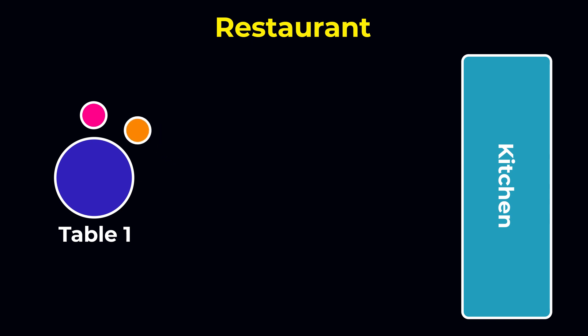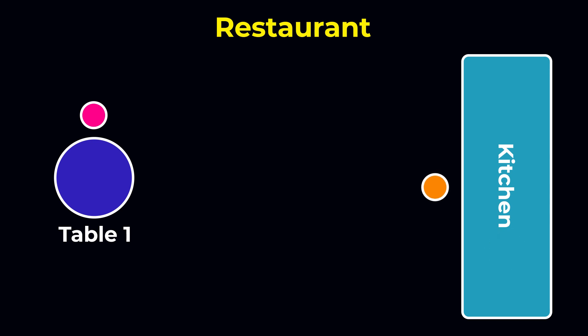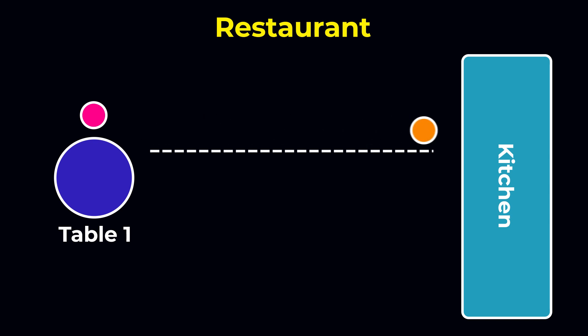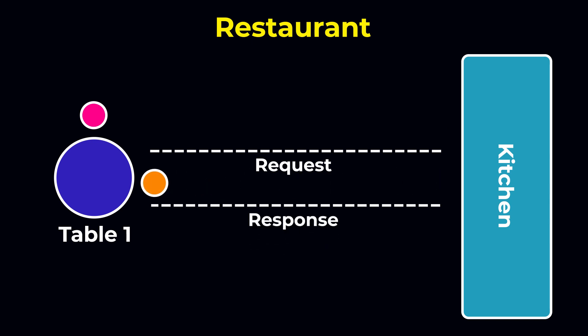The waiter will take our order and then give it to the kitchen. After that, the kitchen starts processing our order and gives the food to the waiter, and then the waiter will deliver our food to our table. So the waiter is like a messenger who takes a request and passes it to the destination, which is the kitchen, and then brings back the response to us.